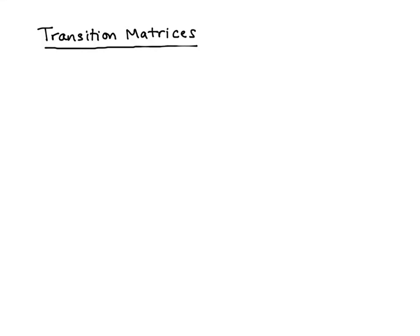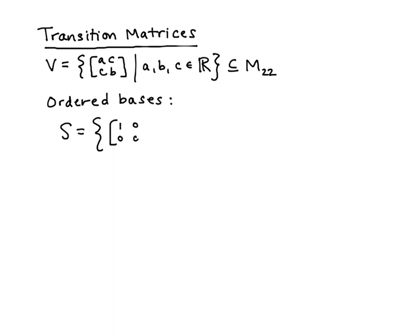This video goes through an example of calculating transition matrices. We're going to work with a set of symmetric matrices, 2 by 2 symmetric matrices. We've already seen that this is a subspace of the 2 by 2 matrices. And to get any sort of coordinates at all, we need ordered bases.